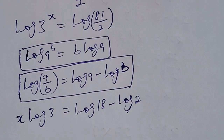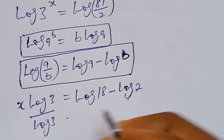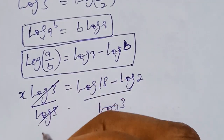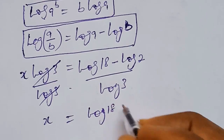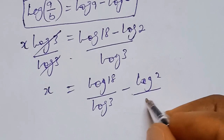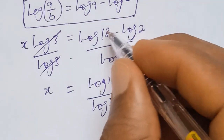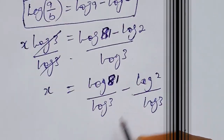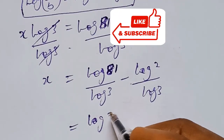We divide both sides by log 3, giving x equals log 81 over log 3 minus log 2 over log 3. Now, 81 can be written as 3^4, so the first term becomes log of 3^4 over log 3.